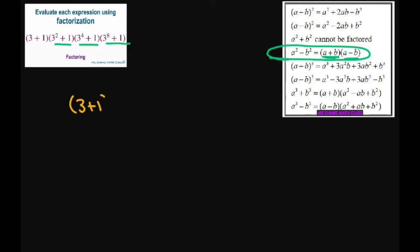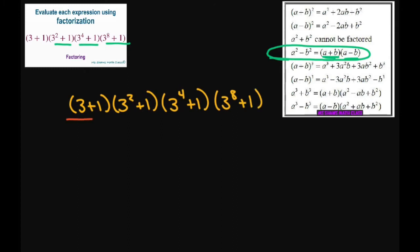What we're going to want to use for factorization is to look at this formula right here. The problem is we need a plus and a minus, and we don't have that. So I'm going to force it by taking 3 plus 1 times 3 squared plus 1 times 3 to the power of 4 plus 1 times 3 to the power of 8 plus 1, and multiply both the numerator and denominator by 3 minus 1.